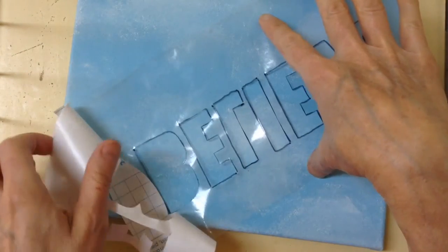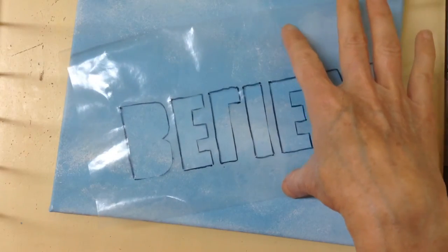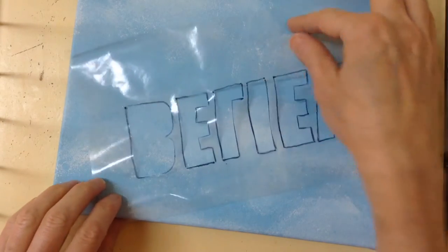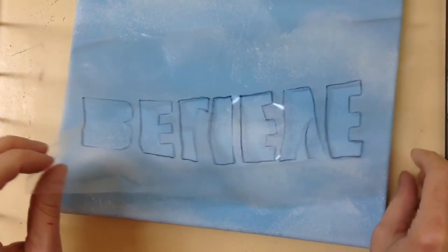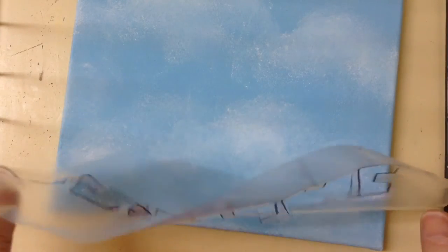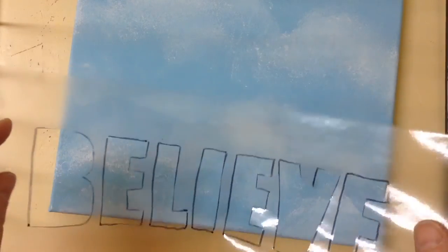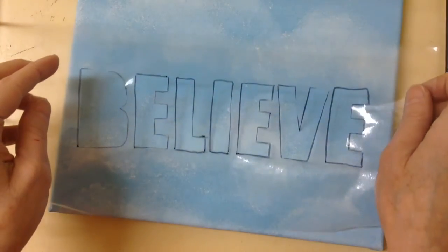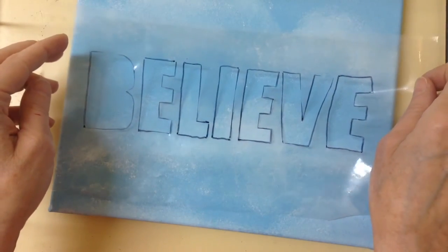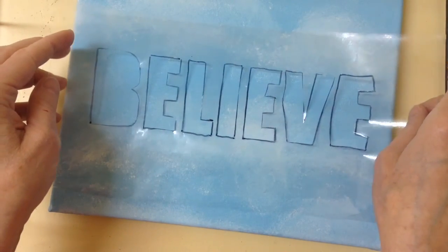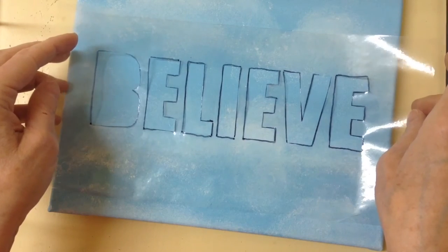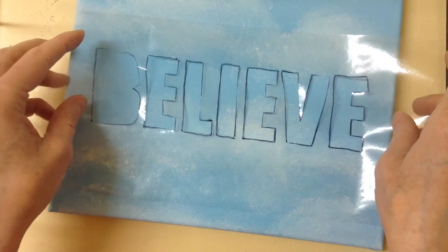It's probably easier if you're doing a phrase that has more than one word, you might want to consider doing one word at a time rather than the whole phrase on one piece. And now we want to very carefully center it so we have equal space on each side.